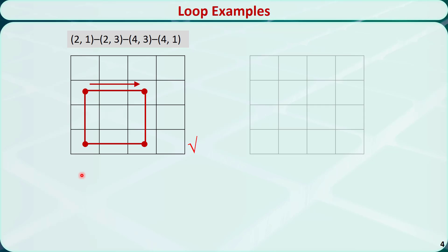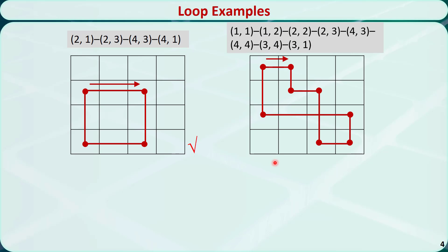Let's check the second example. We pick 8 cells out of 16 cells and build a path. Condition 1 is satisfied because any two consecutive cells are in the same row or column. Condition 2 is satisfied because we do not have three or more consecutive cells in the same row or column. Condition 3 is also satisfied because the last cell is in the same column as the first cell. So this is also a loop.